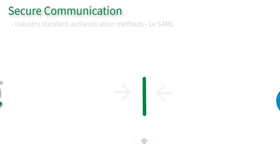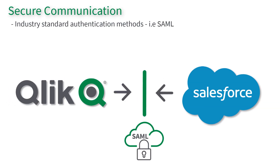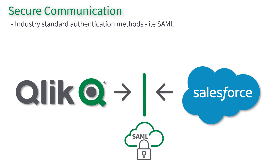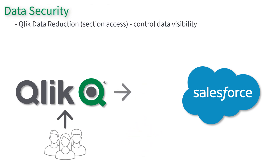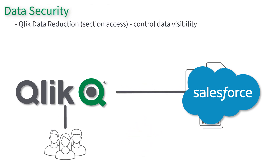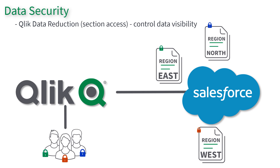Secure communication between Salesforce and Qlik Sense is possible using industry-standard authentication methods like SAML, to only allow the users you want to have access to Qlik Sense content. And once a user authenticates into Qlik Sense, you can use Salesforce attributes in conjunction with Qlik Sense data reduction to control capabilities and restrict access to applications and specific data within.